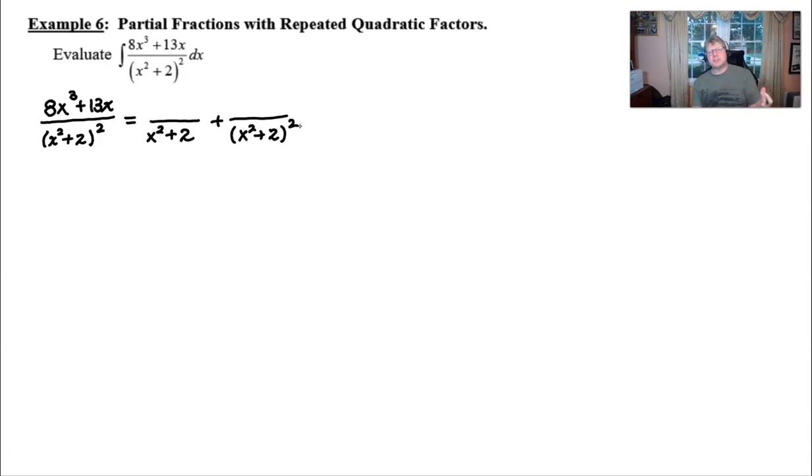If you take a look back at example four, when we built our first partial fraction decomposition of repeated linear factors, we did something very similar. And so it shouldn't be much of a shock that we would set it up this way. The fact of the matter is the common denominator between these two fractions certainly is x squared plus 2 quantity squared.